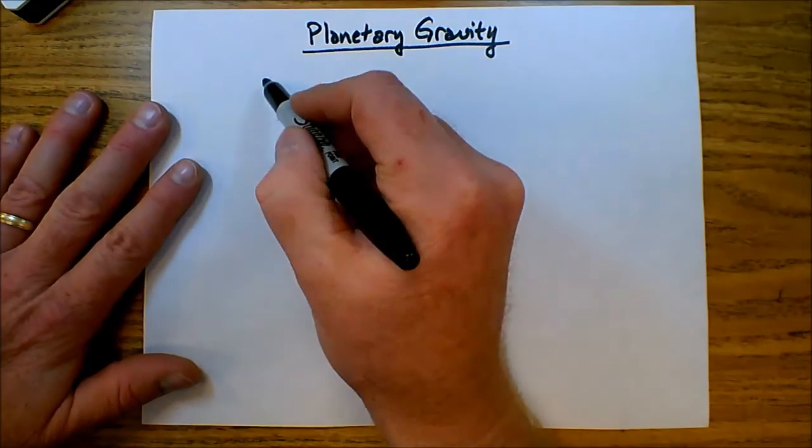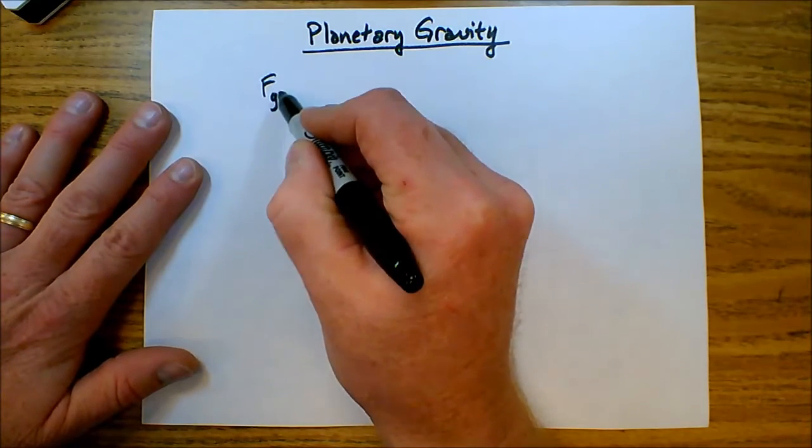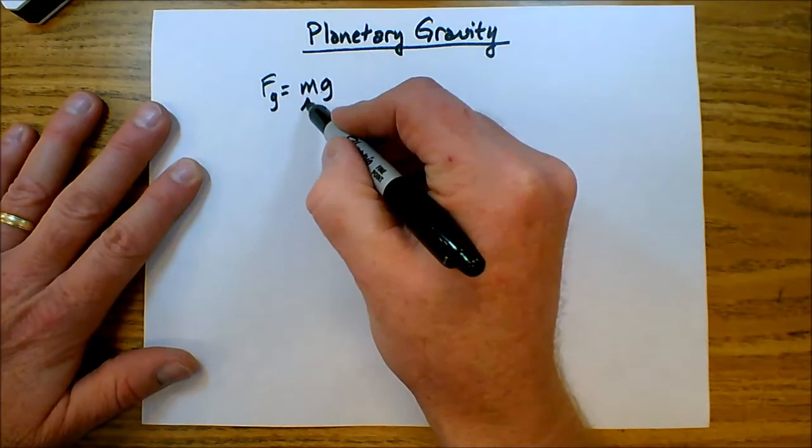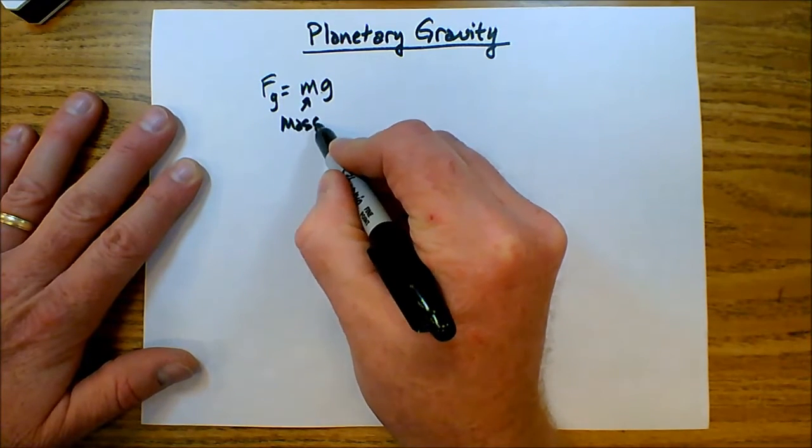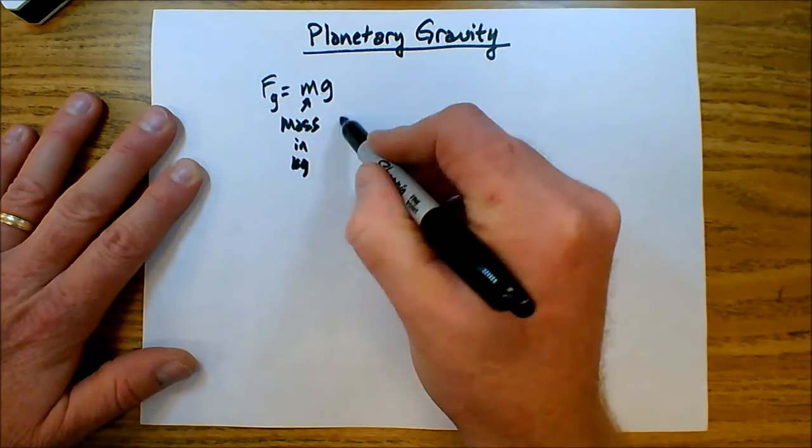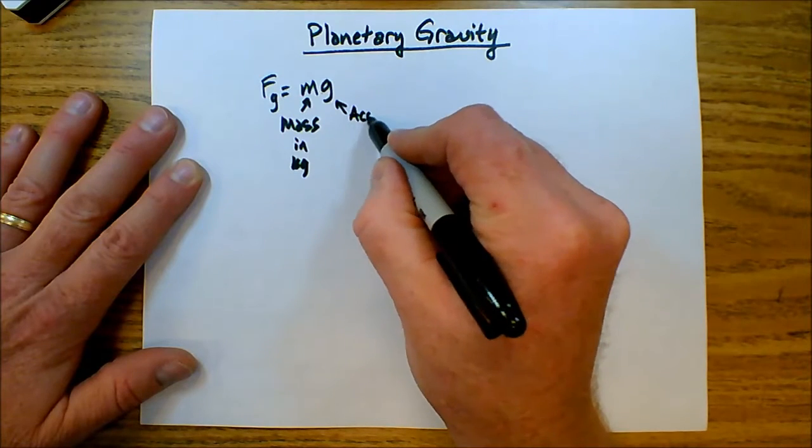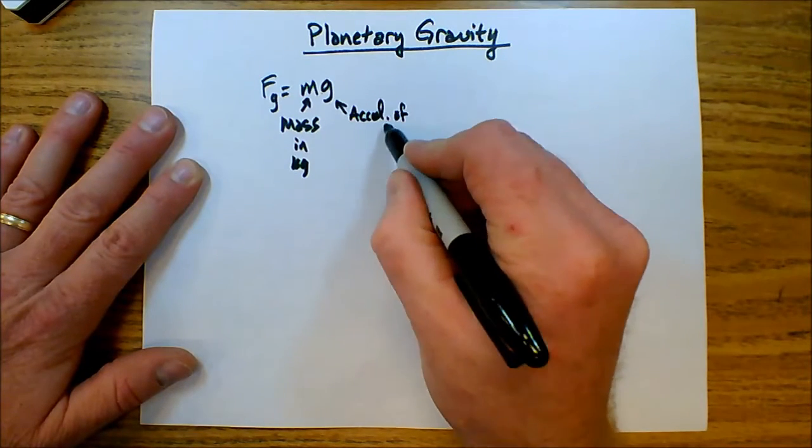So we recall that there's a formula for the force of gravity where the force of gravity equals mg, m being the mass in kilograms, and g being the acceleration of gravity at the surface.